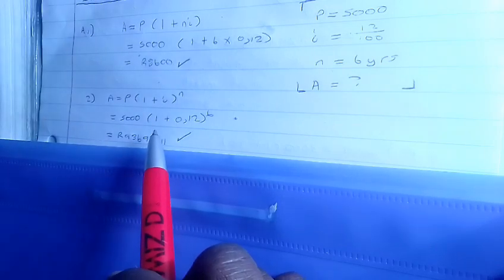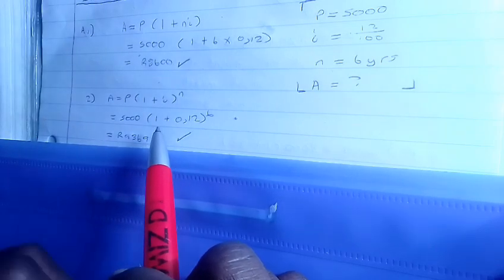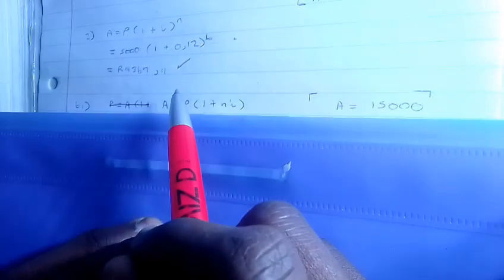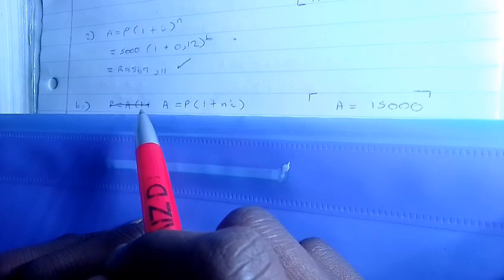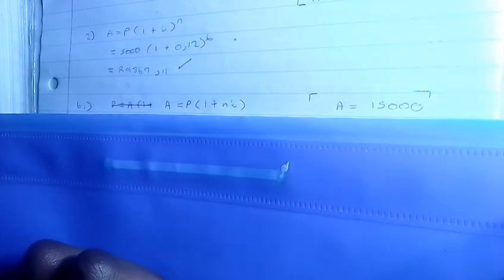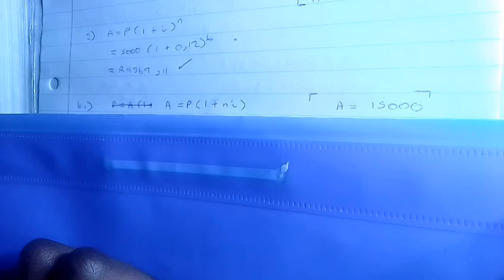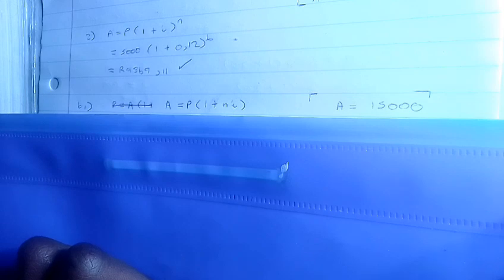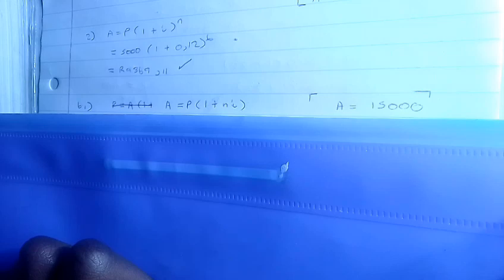Now our second question, which is B, says: Mark invested a certain amount of money and it grew to 15000 over a period of seven years. Calculate the amount of money originally invested if the interest rate received was 15% simple interest.